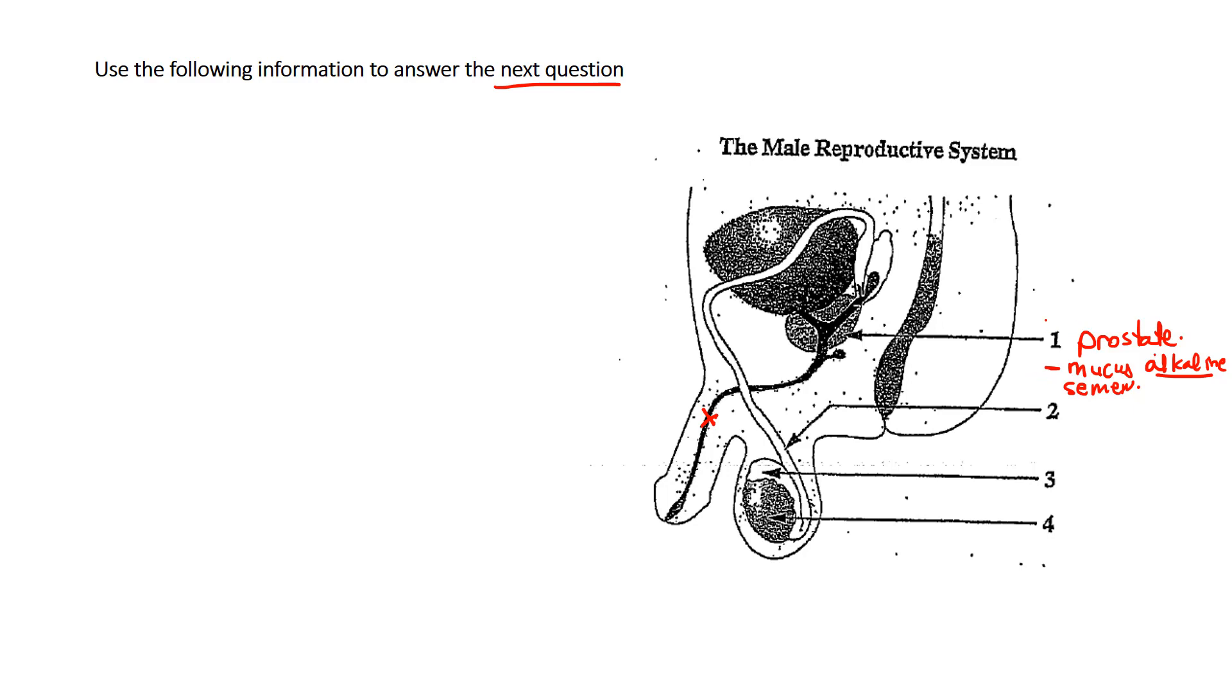We know that there's two other structures that provide or contribute to the semen. This one here is the seminal vesicles, providing the fructose that gives the sperm the energy to be able to swim. So it's motility, so it's able to find the actual egg in the oviduct.